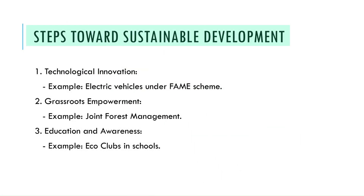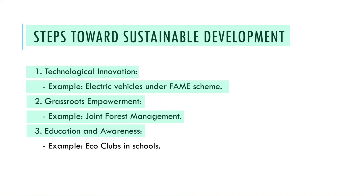To achieve sustainability, we must focus on three key areas. First, technological innovation — promoting energy-efficient and clean technologies, such as the adoption of electric vehicles under the FAME scheme (Faster Adoption and Manufacturing of Hybrid and Electric Vehicles). Second, grassroots empowerment — engaging local communities in sustainable resource management, as seen in joint forest management initiatives in Orissa. Third, education and awareness — spreading knowledge about sustainability through school curricula, awareness campaigns, and eco clubs in schools that encourage students to adopt green practices.